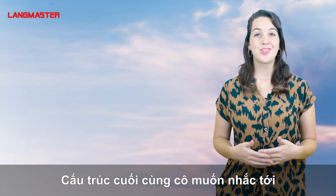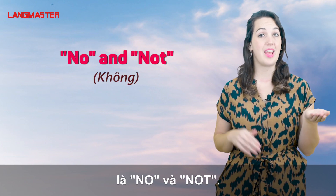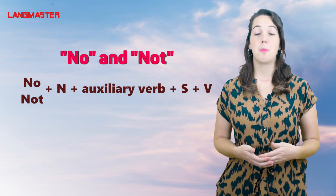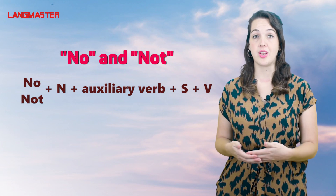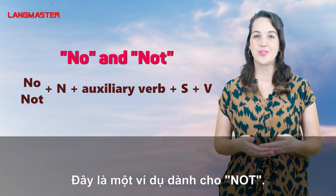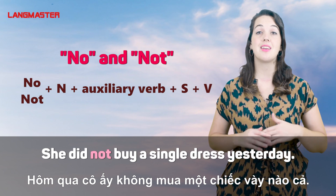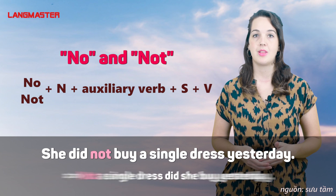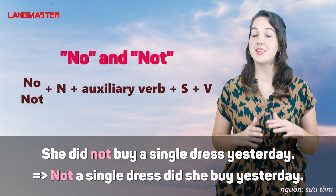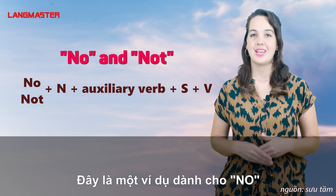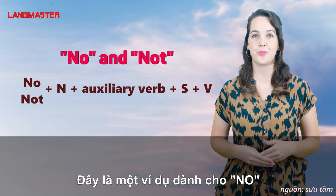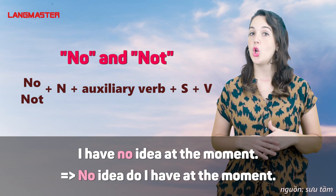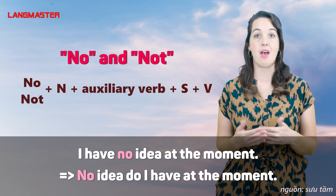The last structure I want to mention is about 'no' and 'not.' The structure is: no or not plus noun plus auxiliary verb plus subject plus verb. Here's an example for 'not': 'She did not buy a single dress yesterday' becomes 'Not a single dress did she buy yesterday.' Here's an example for 'no': 'I have no idea at the moment' becomes 'No idea do I have at the moment.'